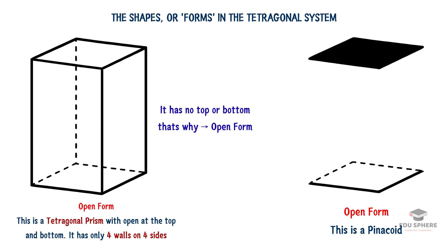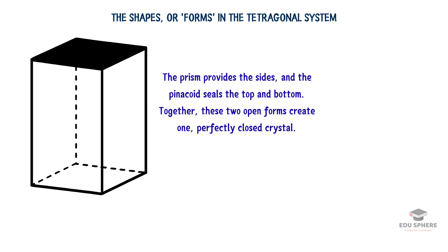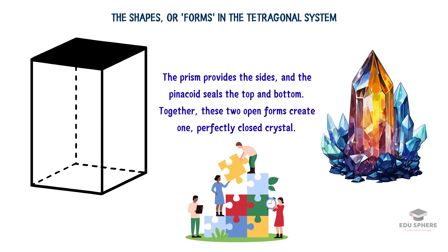So how do we get a finished crystal? Simple. They have to combine. The prism provides the sides and the pinacoid seals the top and bottom. Together these two open forms create one perfectly closed crystal. It's this teamwork between different shapes that gives us many of the beautiful crystals we see in nature.